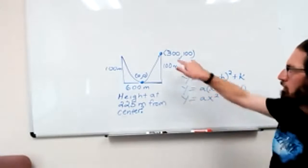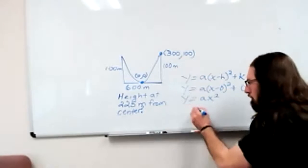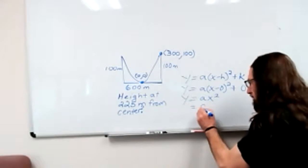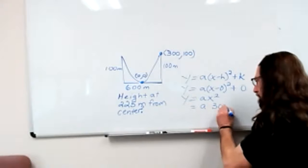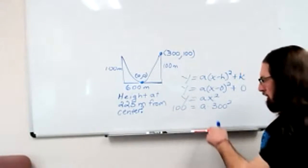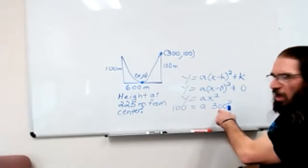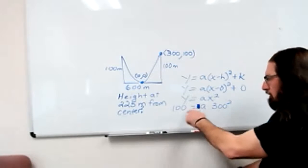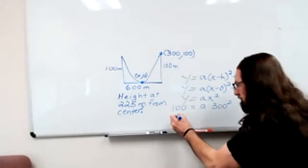Furthermore, we've got another point. x being 300 and y being 100. Then since 300 squared, whatever that is, times a, we'll divide by that.